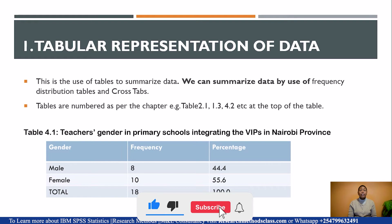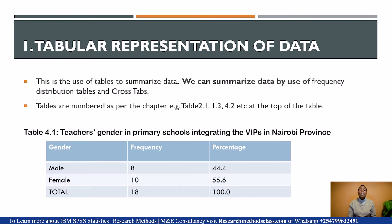We start with tabular representation of data. Tabular means the use of tables to summarize data. We mainly have two tables used in social science: frequency distribution tables and cross-tabulation tables, or cross-tabs. Remember that tables are numbered as per the chapter number. For instance, table 2.1 means table 1 in chapter 2, and table 4.2 means table 2 in chapter 4.